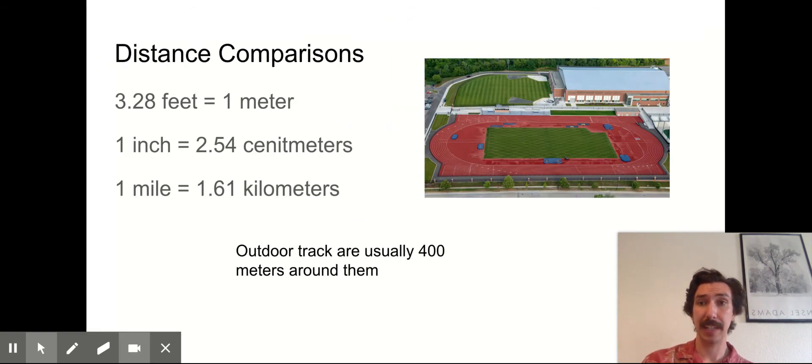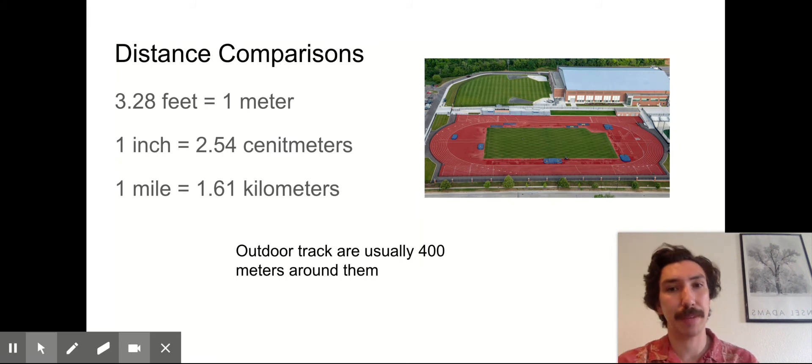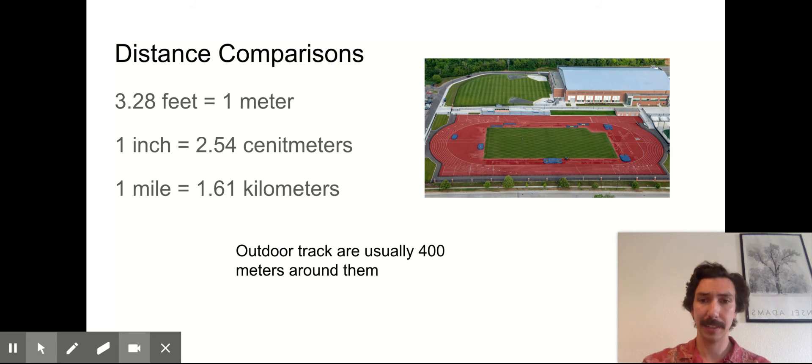For distance we're using meters. So one meter is about 3.28 feet. We'll also be measuring things in centimeters in this class. So one inch is equal to 2.54 centimeters. And for those people who run track, track's already kind of converted to the metric system. So if you're running one lap around the track that is about 400 meters.